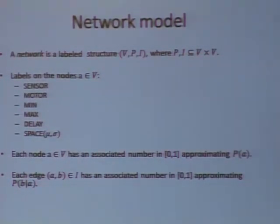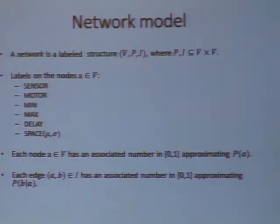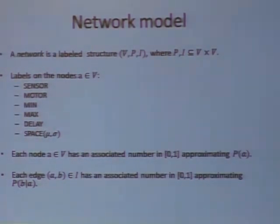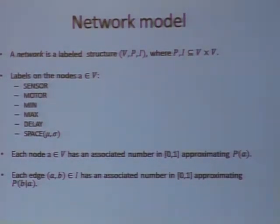Our network model is a label structure — like a graph with two edge relations. We have labels on the nodes: sensor, motor, min, max, delay, and space. Each node has an associated number which approximates its probability, and each I-edge has an associated number approximating its conditional probability.